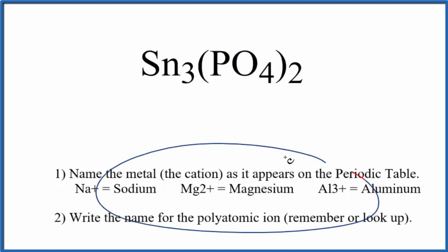We're going to use these rules here to write the name for Sn₃(PO₄)₂. First, we write the name of Sn just as it appears on the periodic table. Sn, that's tin.